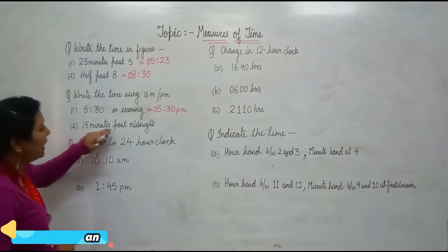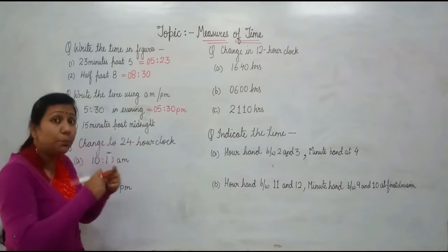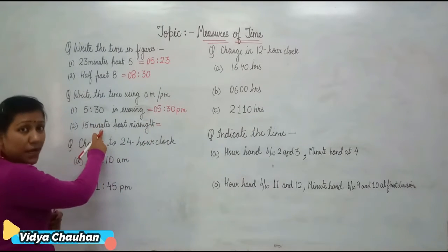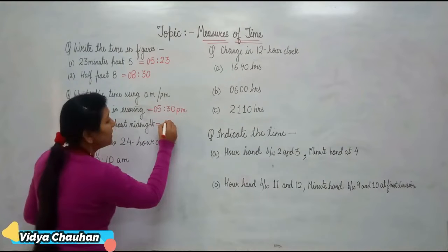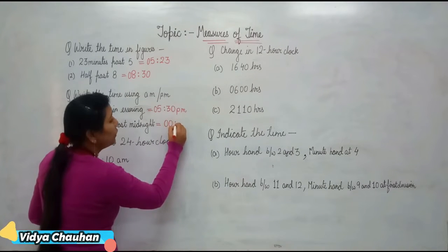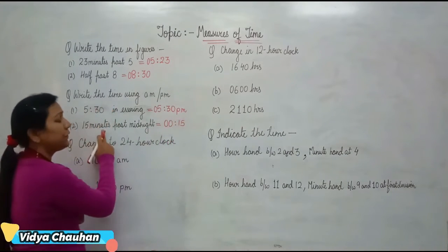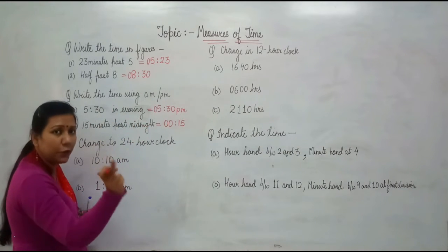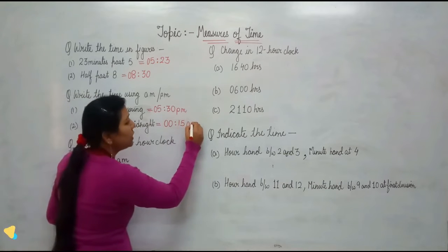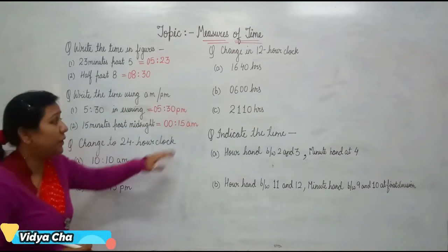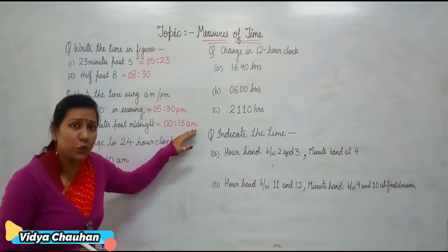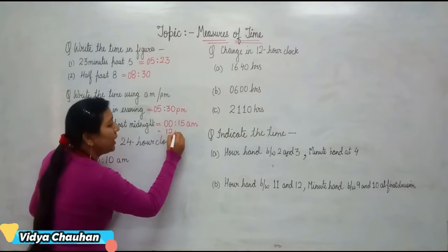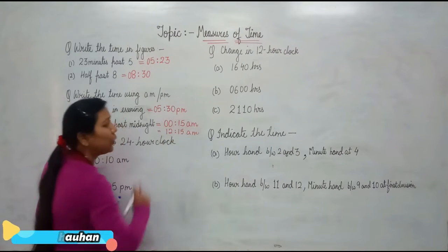The second one: 15 minutes past midnight. It is past midnight, that means after midnight. So that will be 15 minutes past. You will write it as 0015 AM, because it is 15 minutes past and it is midnight to noon — that means 12 midnight to 12 noon. So it is 0015 AM. You can also write it as 12:15 AM. Both ways are correct.